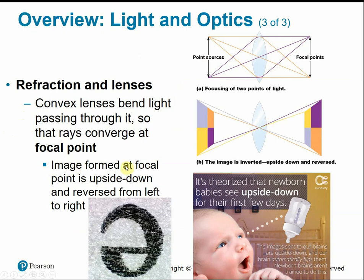The image formed at the focal point is actually upside down and reversed from left to right. Processing in the brain during perception flips our received images right side up so that we don't perceive everything upside down — similar to when we look at a letter E slide under the microscope, where it appears flipped and reversed compared to the naked eye.